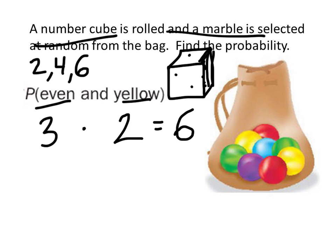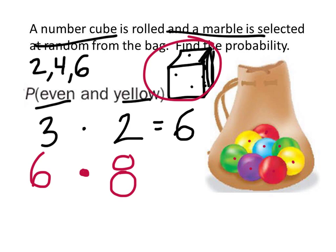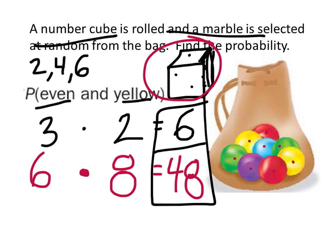What about the total number of outcomes? On the number cube there are six possible outcomes since it's six-sided. Counting the marbles in the bag: one, two, three, four, five, six, seven, eight — eight marbles total. It doesn't matter that the yellows repeat because we could choose either one. So six times eight is 48. Our fraction is six over 48, which reduces to one-eighth. Either form will work as your answer.